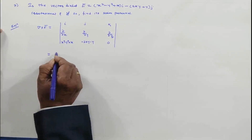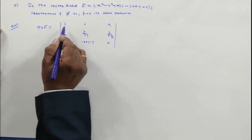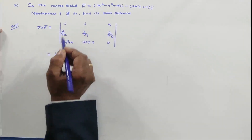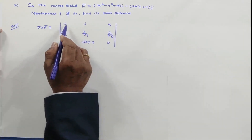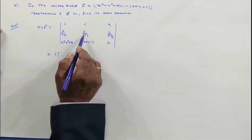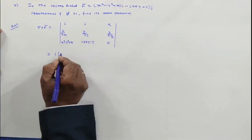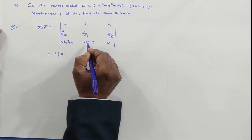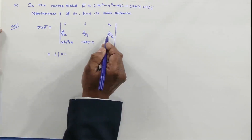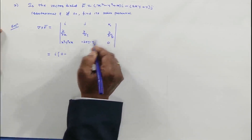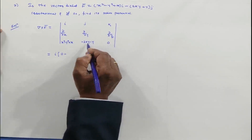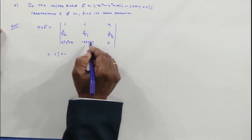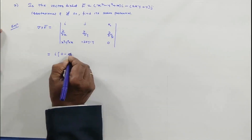Now we solve this determinant. For the minor of i, we leave that row and column. The derivative ∂/∂y of 0 is 0, and ∂/∂z of the expression — taking the derivative with respect to z while keeping x and y constant — gives 0, since z is not present in the expression, making it a constant.